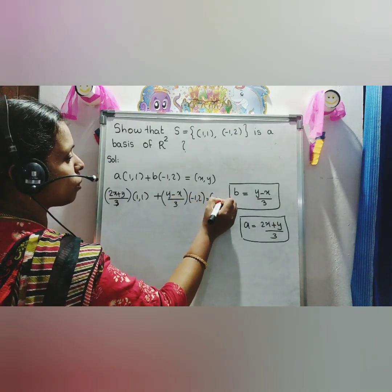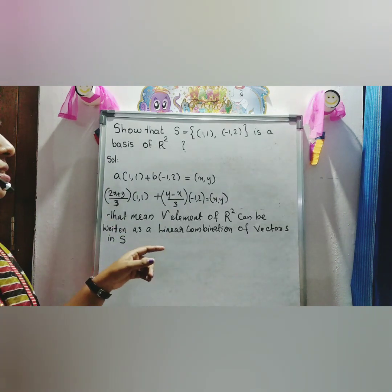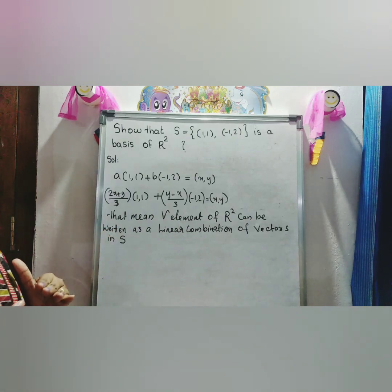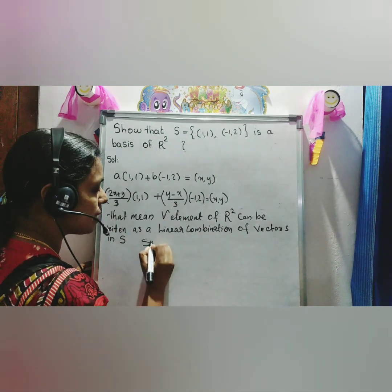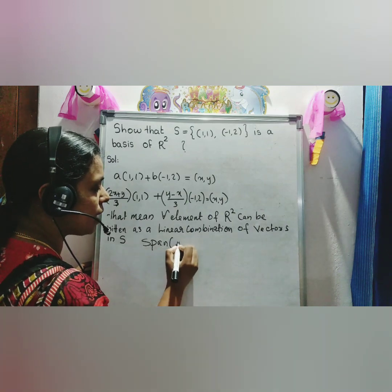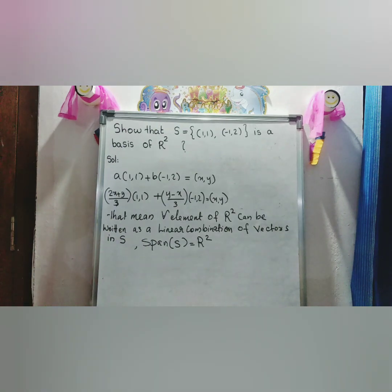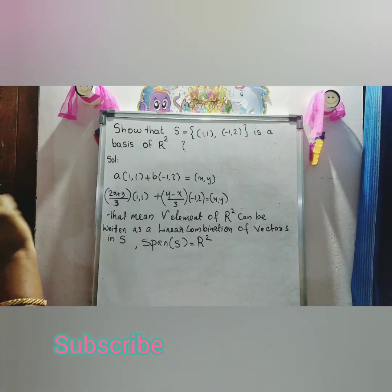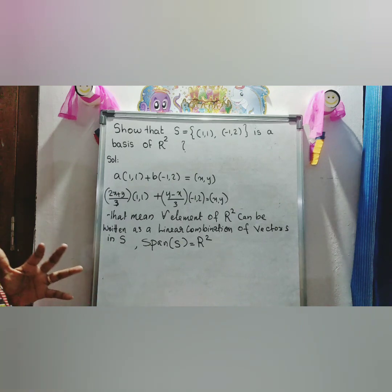That equals (x, y). That means every element of R² can be written as a linear combination of vectors in S, so span of S is equal to R². Since S is linearly independent and span of S equals R², we conclude that S is a basis of R².